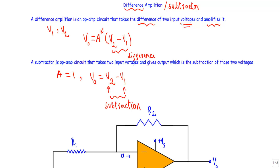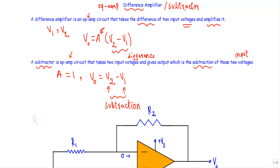That is known as the operational amplifier subtractor circuit — an op amp circuit that takes two input voltages and gives an output which is the subtraction of the two input voltages. So if I show that output V0 equals some amplification factor times the input voltage difference, that is our difference amplifier. If A becomes 1, the output is the difference of the two inputs, and I call that circuit a subtractor circuit.